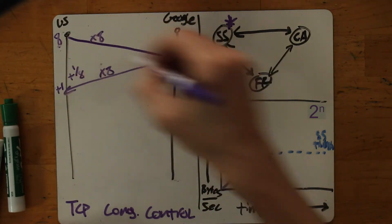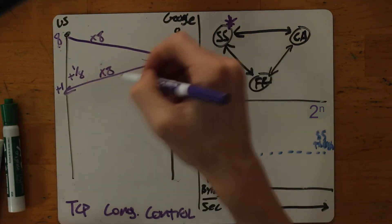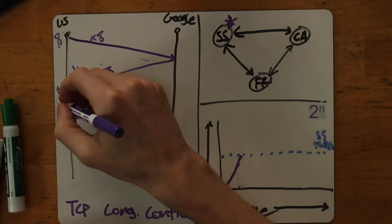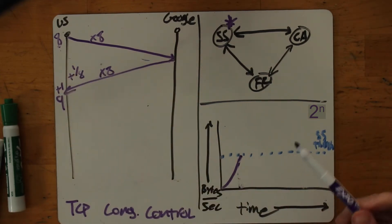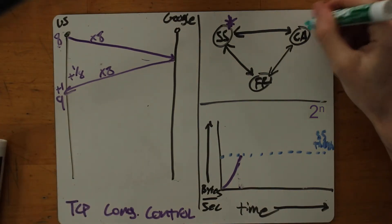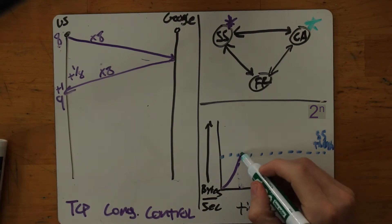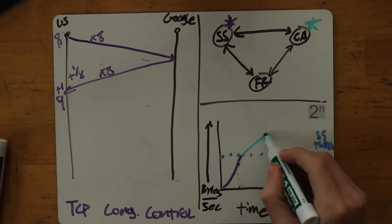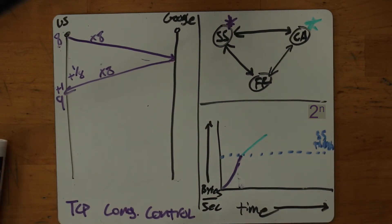So after sending out eight packets and receiving eight acknowledgements back, now in the next round I can send out nine. So I probably should have switched to another color. This is congestion avoidance. And so it looks exponential during slow start, and then it starts to look linear after that.